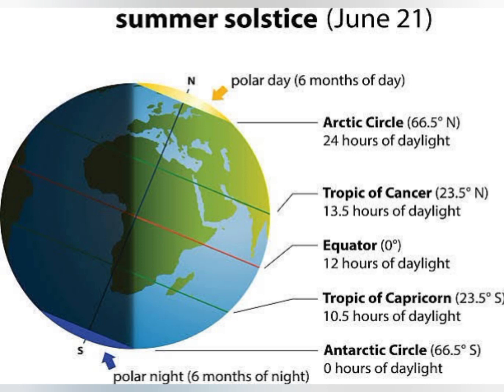When the north pole is tilted towards the direction of the sun, it is summer in the northern hemisphere and the sun's rays strike at right angles. On that day — 21st of June — it is called the summer or June solstice. The sun's rays directly fall at the Tropic of Cancer at right angles.